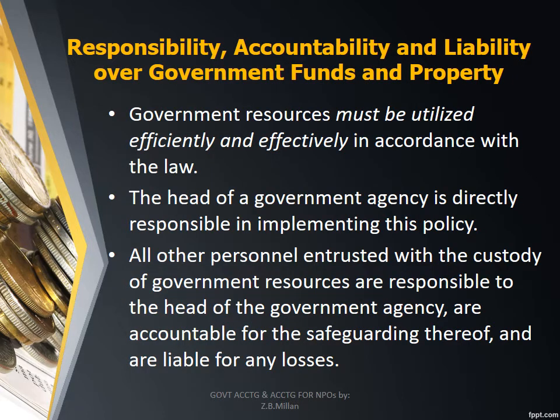As mentioned earlier, there is emphasis on responsibility, accountability, and liability over government funds and property. The end goal is for the government resources to be utilized efficiently and effectively. By efficient, we refer to doing things right — the government agency can deliver a given quantity and quality of outputs with minimum inputs, or the agency can maximize outputs out of the limited resources entrusted to it. By effective, on the other hand, it refers to doing the right things, meaning the operating units are able to achieve the expected results and contribute to the achievement of the organization's goal.